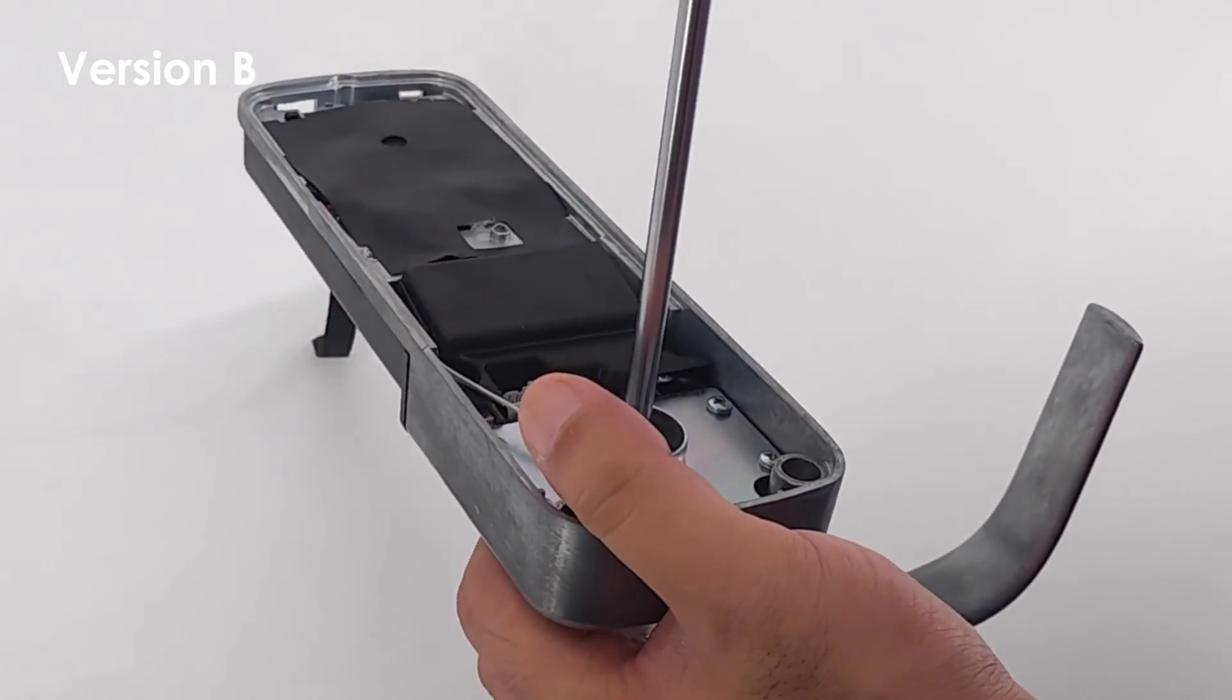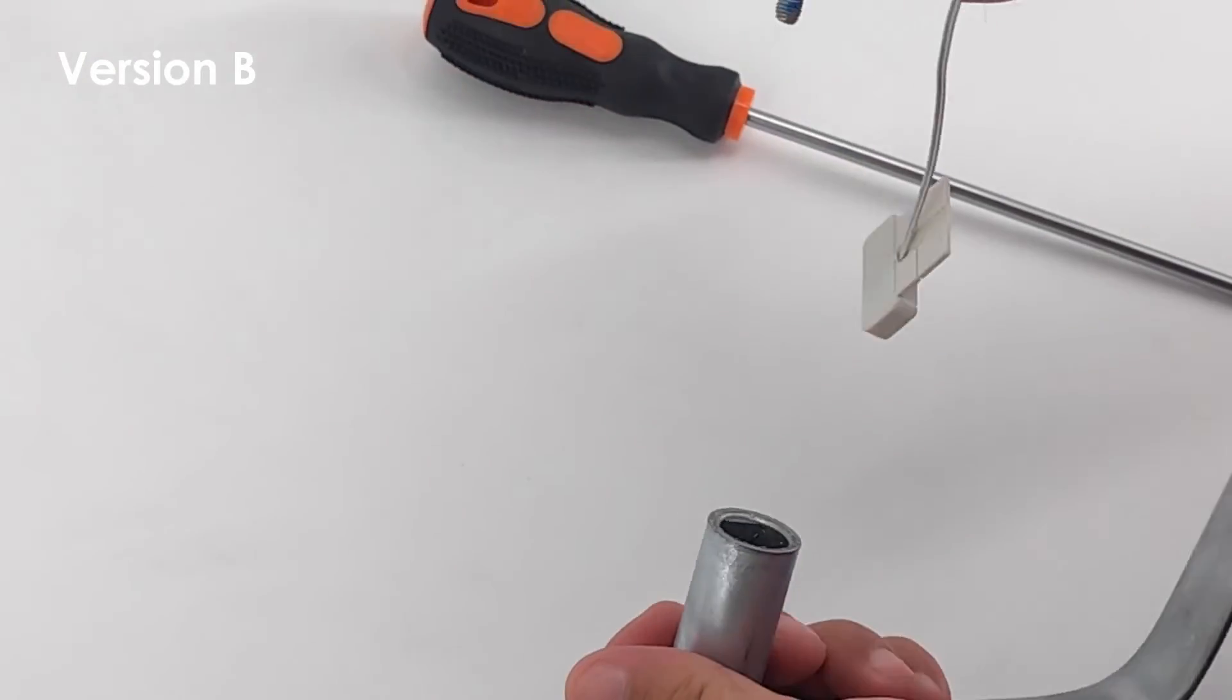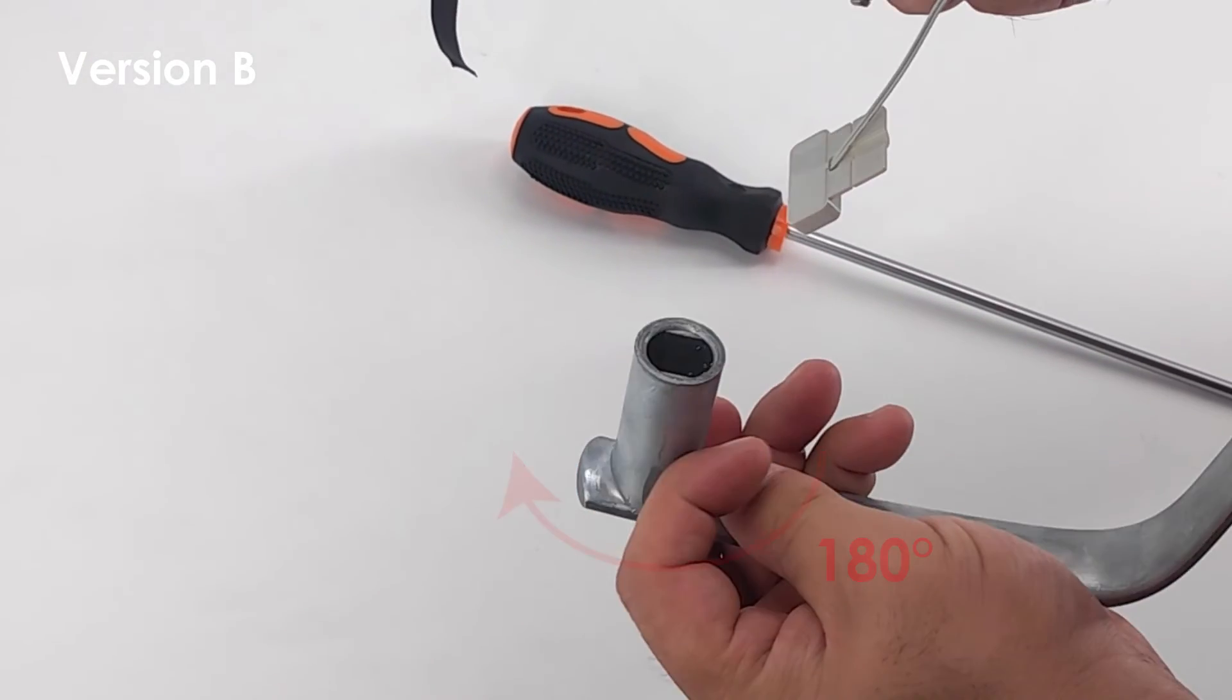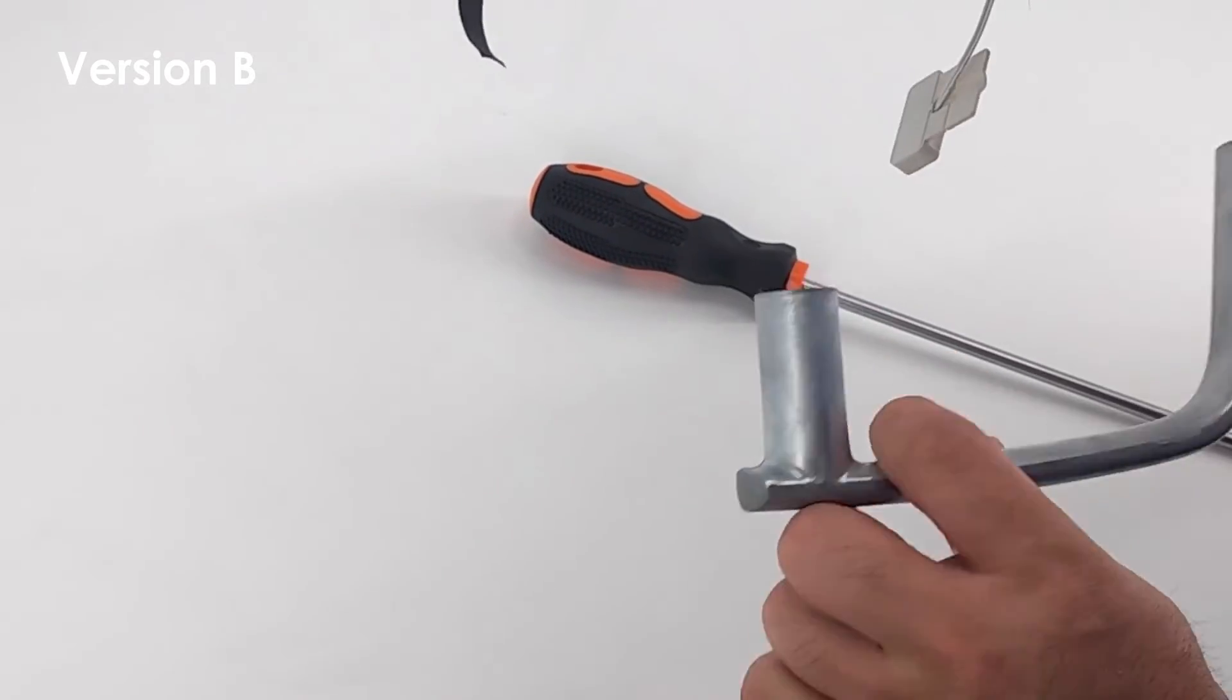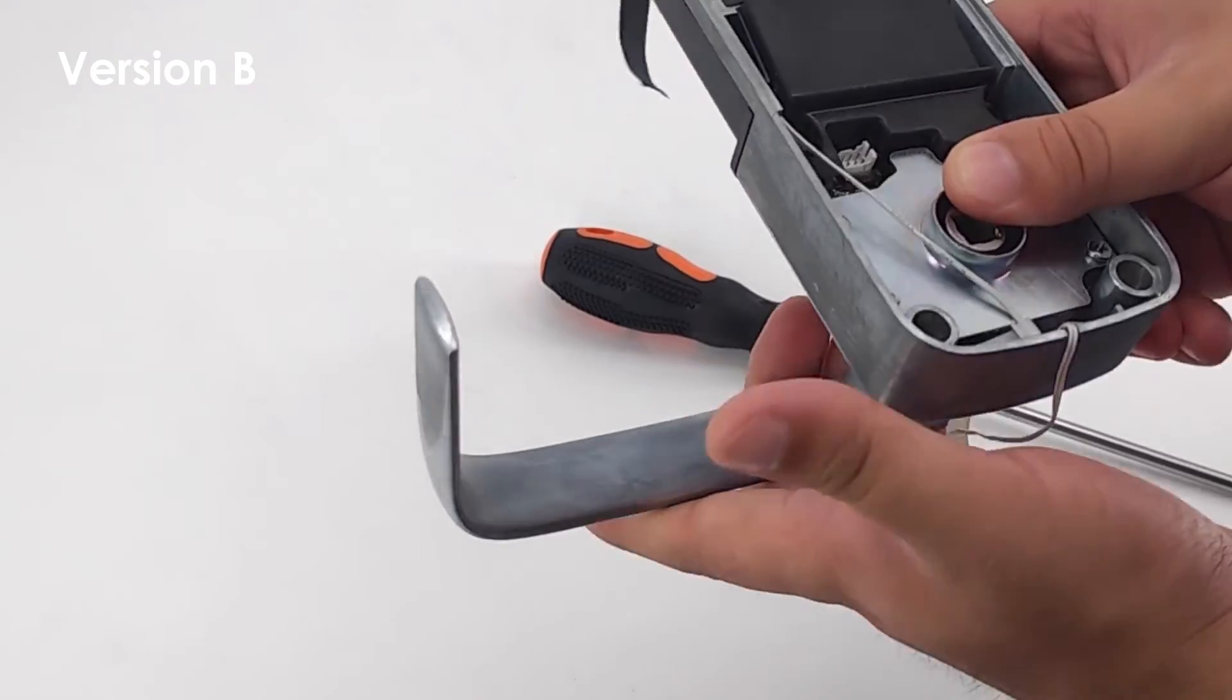Version B: Remove the handle retaining screw and detach the handle. Rotate it to 180 degrees then return as shown. Insert the handle retaining screw and tighten using a screwdriver.